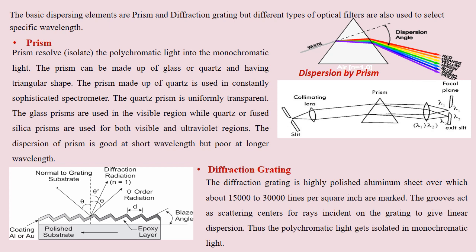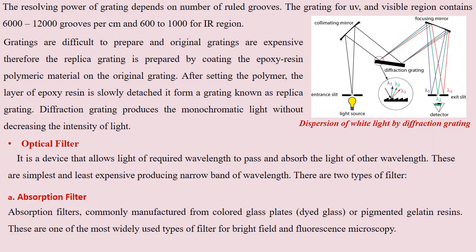In some sophisticated instruments, another dispersing device is used which is known as a diffraction grating. A diffraction grating is a highly polished aluminum sheet over which about 15,000 to 30,000 lines per square inch are marked. These grooves act as scattering centers for the rays incident on it. When rays are incident on it, they are scattered by the grooves, and in this way polychromatic light is converted to monochromatic light — that is, light of different wavelengths.